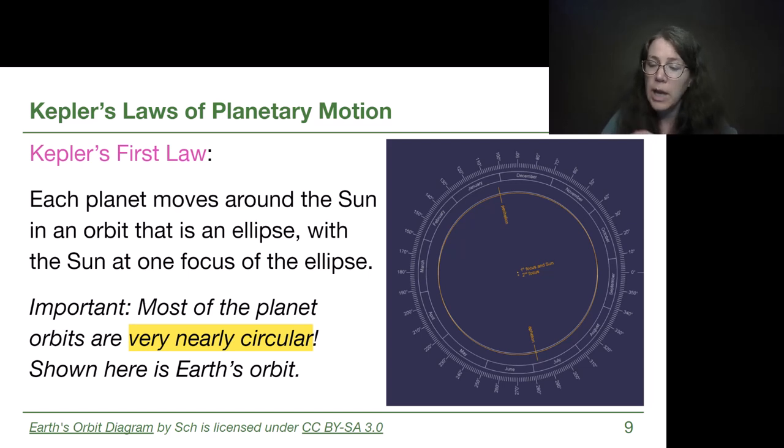So Kepler's first law, the important thing is that he threw out circles, it's ellipses instead, but nearly circular ellipses.